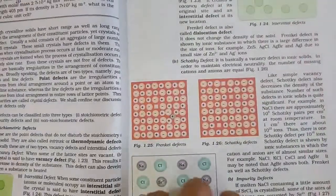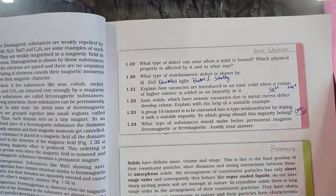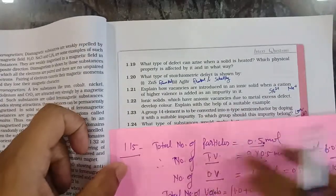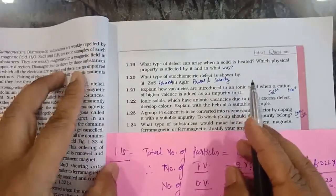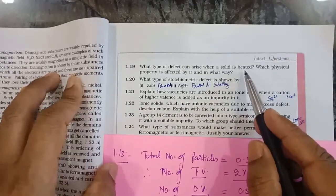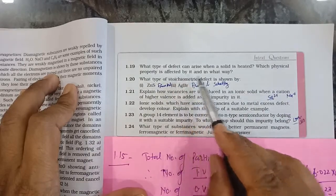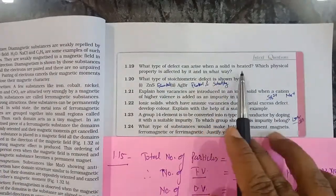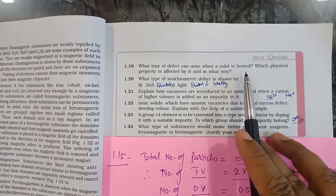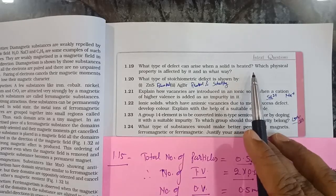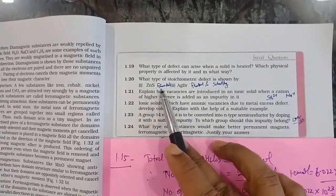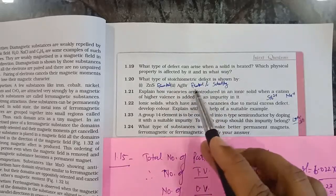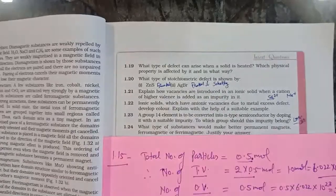Question 1.19 — what type of defect can arise when a solid is heated? When a solid is heated, particles gain energy and move from their own positions; therefore, the kind of defect that arises is vacancy defect. The physical property affected is density — it decreases due to the loss of particles. ZnS shows Frenkel defect, and AgBr shows both Frenkel and Schottky defects — it is a common example of both.